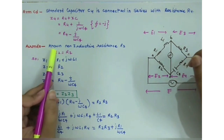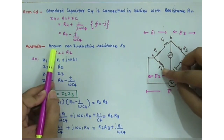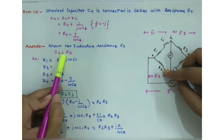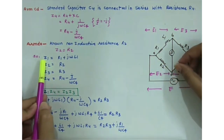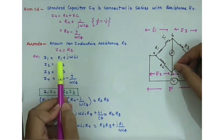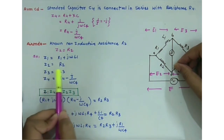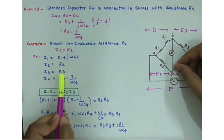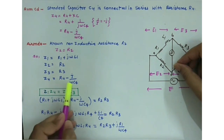Arm DA includes a non-inductive resistance R2, so Z2 = R2. Summarizing all four impedances: Z1 = R1 + jωL1, Z2 = R2, Z3 = R3, and Z4 = R4 − j/(ωC4).